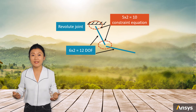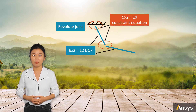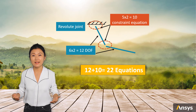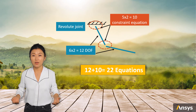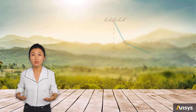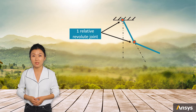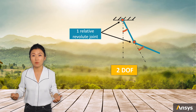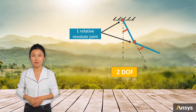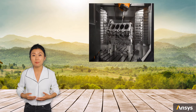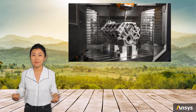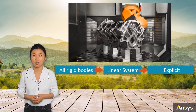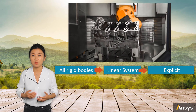Two revolute joints add 10 constraint equations, giving 12 + 10 = 22 equations in total. However, using relative degrees of freedom, we can reduce all of these to only two degrees of freedom — the rotational angles of the two joints. As long as these two angles are known, the configuration of the system is determined. Since structural stiffness is removed, there is no nonlinear equation to solve, so the explicit method is suitable for most rigid body dynamics.